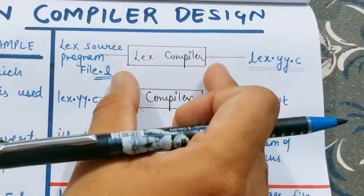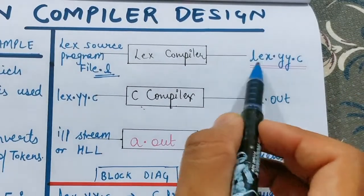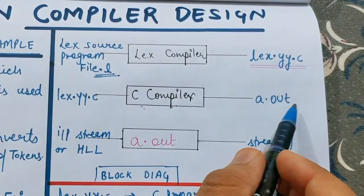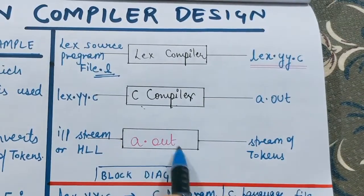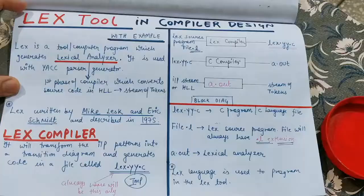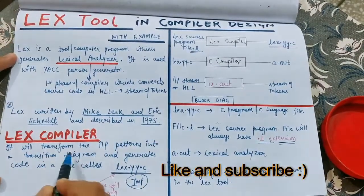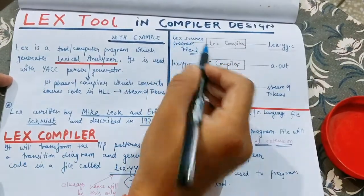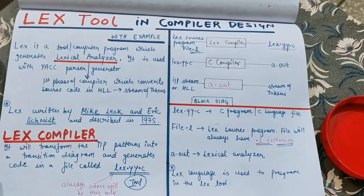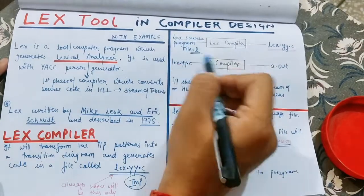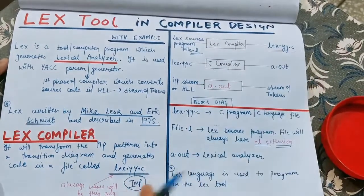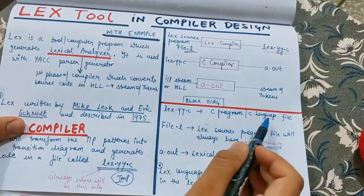So these were the three steps: we give a file as input to the Lex tool, we get 'lex.yy.c' as a C program file, we give that to the C compiler and get 'a.out' as the lexical analyzer, and then we feed high-level language to the lexical analyzer to produce a stream of tokens. The Lex compiler transforms the input patterns from the source file into a transition diagram and generates code saved in 'lex.yy.c'. This transition diagram and its corresponding code are stored in that file.